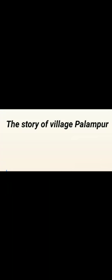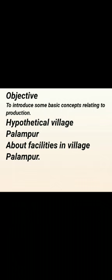Hello everyone. Today we are going to start Chapter 1 of Class 9 Economics. The name of the chapter is 'The Story of Village Palampur.' The objective of this chapter is to introduce some basic concepts relating to production. We shall come to know about this after reading about this particular village, which is a hypothetical village — meaning not existing in reality.